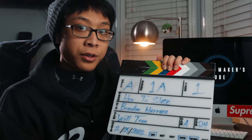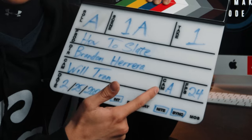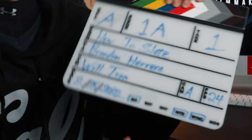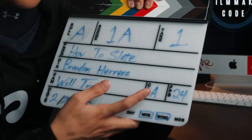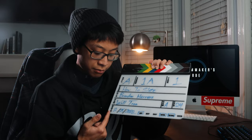Director is which director. Camera is who's the cam op or DP. Cam, the smaller one, is which camera you're seeing through. FPS is what frame rate you're shooting at. And the date, which is the date.